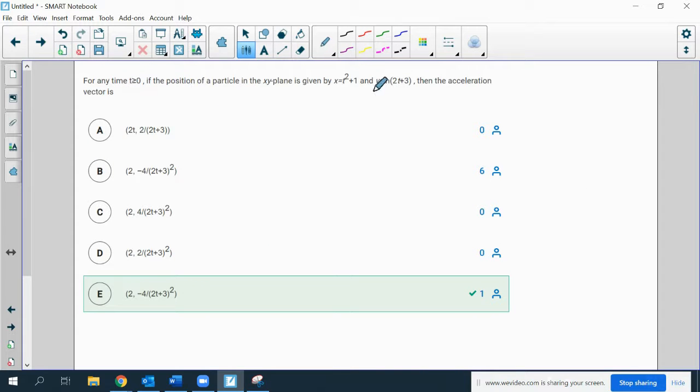For any time t greater than or equal to 0, position of a particle in the xy plane is given by these two things, then the acceleration vector. It looks like everybody got it right in my class that had taken it by 6pm on Sunday, but both of these things appeared to be listed and everybody picked that, so I just wanted to let you know if it was labeled as wrong, it doesn't appear that there's any difference to me.